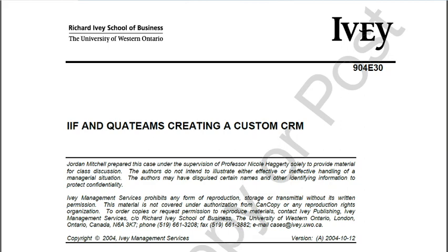IAF wanted to handle the growing number of members and track interactions between its staff and its various members. With about two months left until the scheduled launch, both IAF and QuaTeams needed to make decisions — overcoming remaining technical hurdles with the database and security, and considering implementation issues and creative ways the CRM could be used once operational.